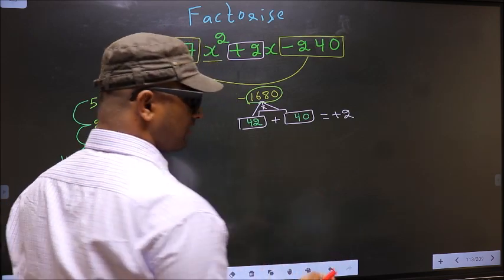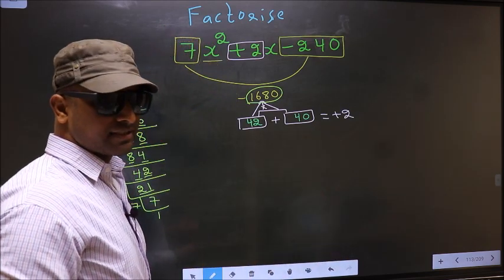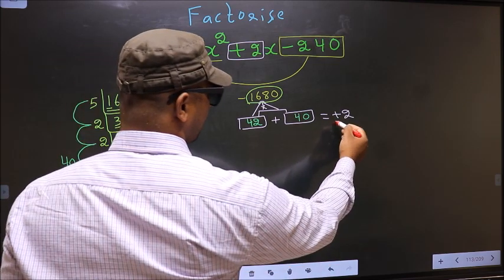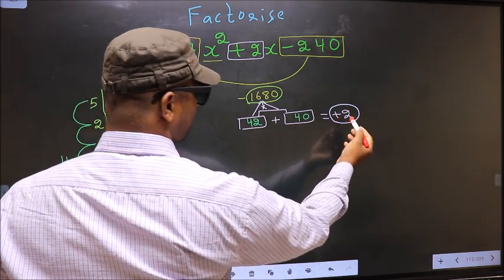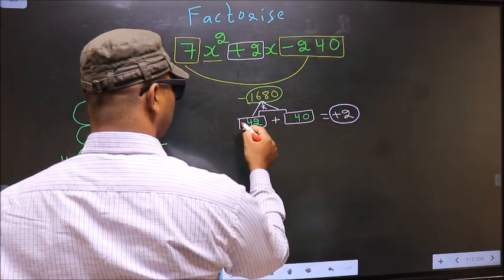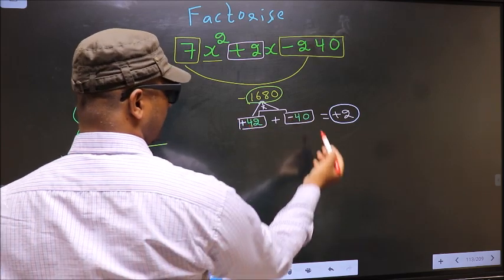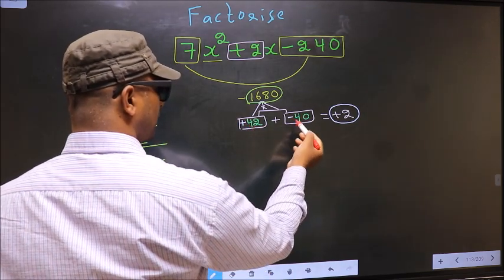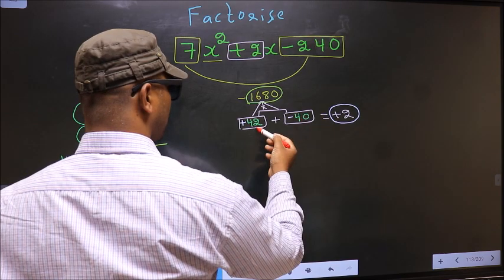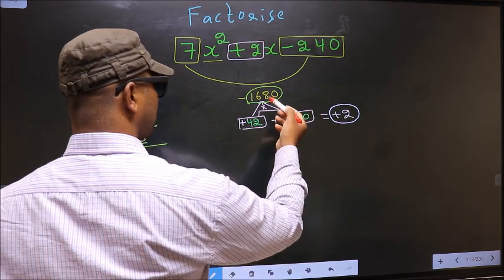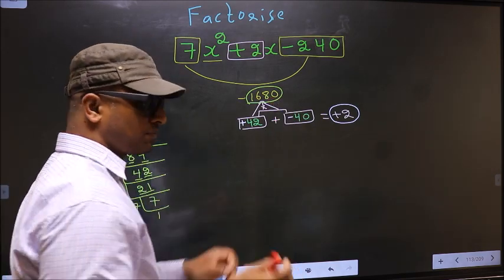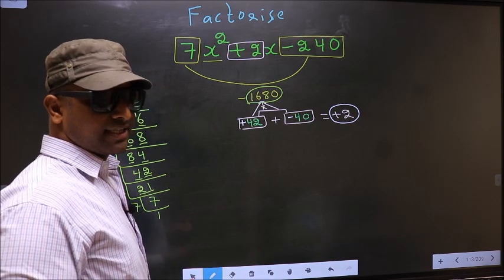Now we should adjust the signs. What I mean is, over here we have +2. To get +2, we should put + here and - here. +42 - 40 is +2, +42 × -40 is -1680. So we have adjusted the signs.